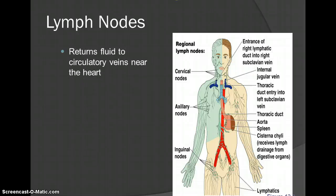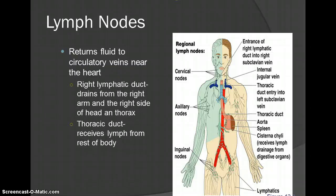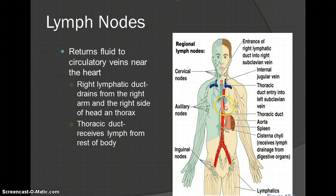Your lymph nodes return the fluid to veins near the heart. You have two different ducts, and you'll have to know the difference. You have your right lymphatic duct — on your right side, notice it's not your entire right side of the body. It empties from your right arm to the right side of your head and thorax. The thoracic duct goes to the rest of the body: both your legs, left arm, thorax, and head.